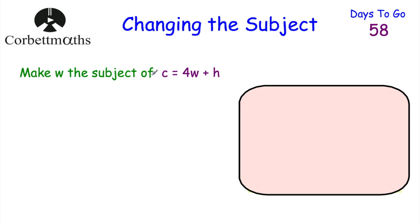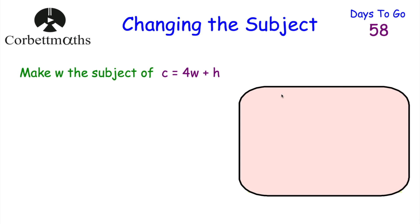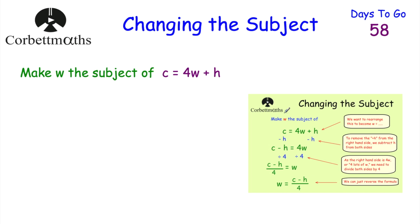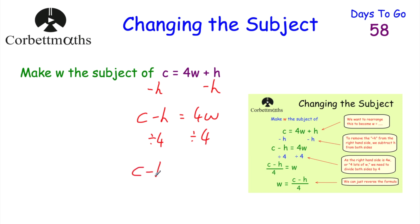Our last question says: make W the subject of C equals 4W plus H. Before I start, if you've got the Cogmaths revision cards, this example is actually on the changing the subject card. So: subtract H from both sides — C subtract H equals 4W. Now divide both sides by 4. On the left hand side: C subtract H over 4. On the right hand side: just W. So W equals C subtract H over 4, and we've made W the subject.